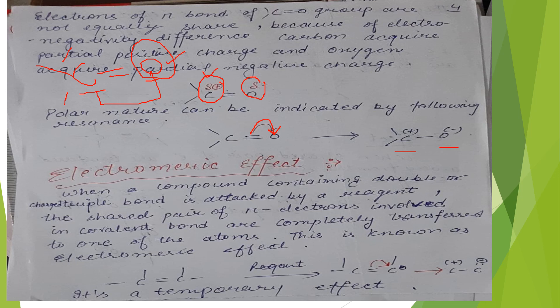Next is the electromeric effect. When a compound containing a double or triple bond is attacked by a reagent, this is called the electromeric effect.